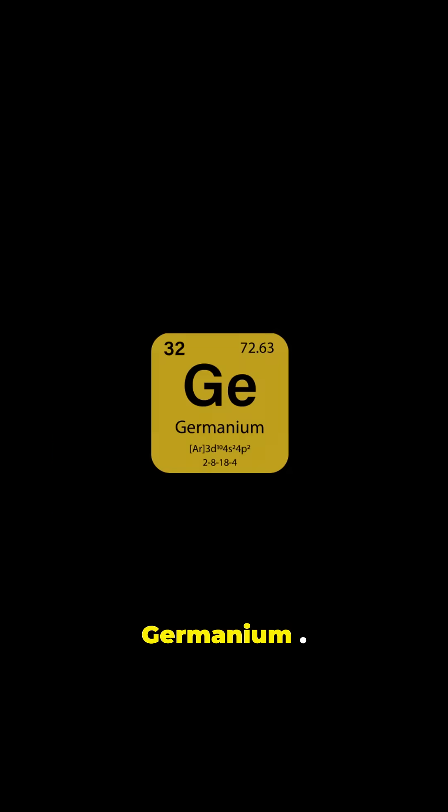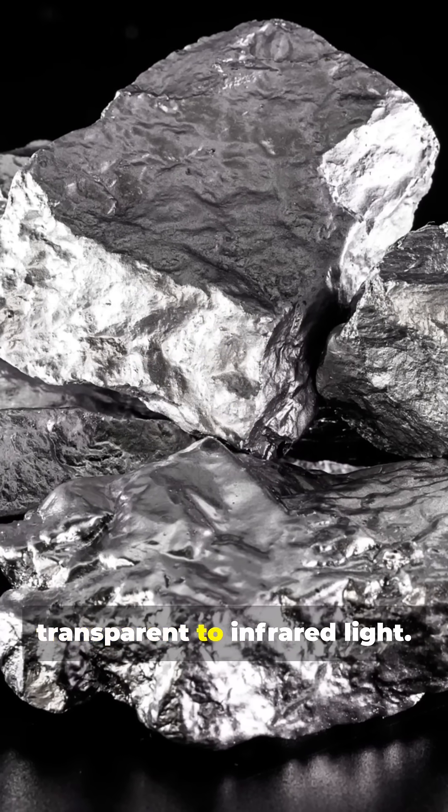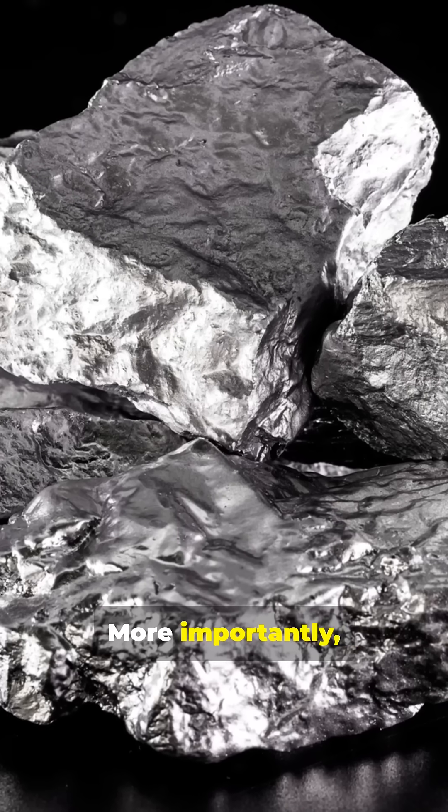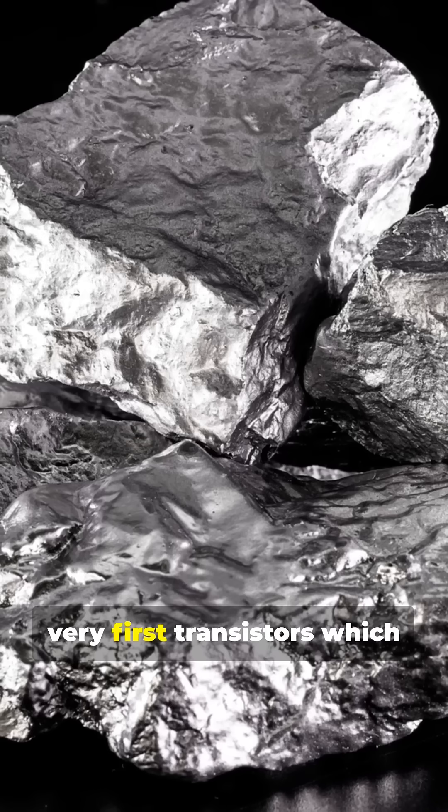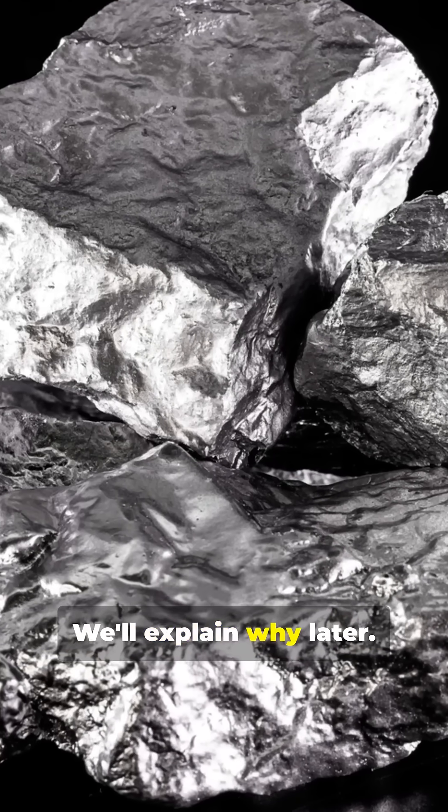Element 32, Germanium. Germanium is a hard silvery metalloid that is transparent to infrared light. More importantly, the element helped create the very first transistors which launched the computer age. We'll explain why later.